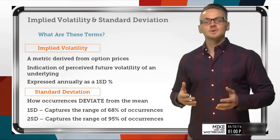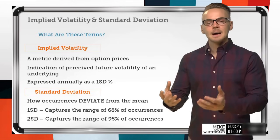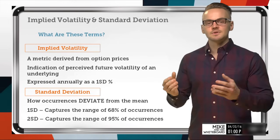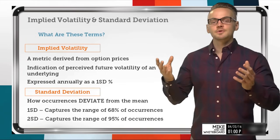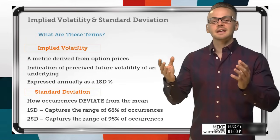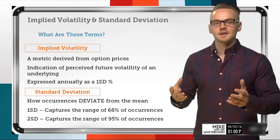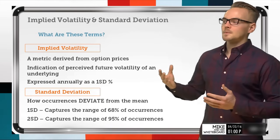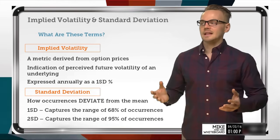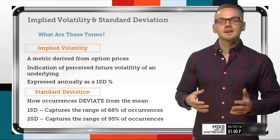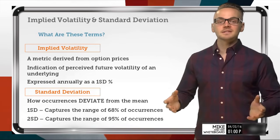It's really interesting in the sense that we use the underlying option market to determine what the perceived future volatility of that underlying is, based on the price action of the options market. So when we're looking at implied volatility, we're really looking at the expressed one standard deviation percentage on an annual basis.